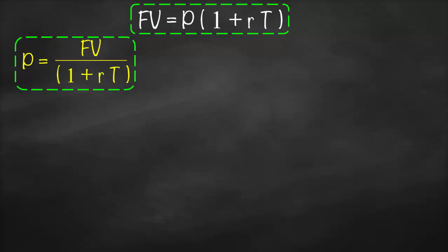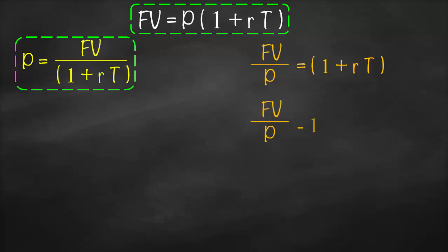Our third formula will calculate simple interest or time. Therefore, we need first to get rid of P by dividing both sides by P. So future value divided by principal is equivalent to one plus simple interest times time. Then we need to subtract one from both sides, so future value divided by principal minus one is equivalent to simple interest times time. Based on this, if we want simple interest we divide the left part by t, and if we want time we divide the left part by simple interest.